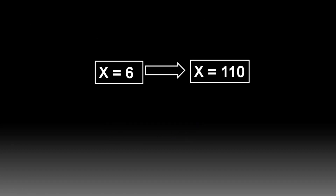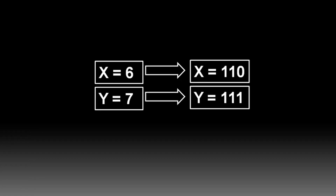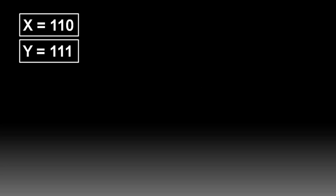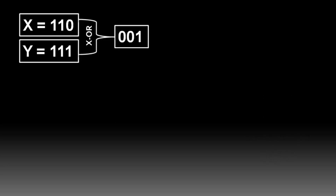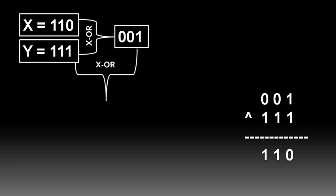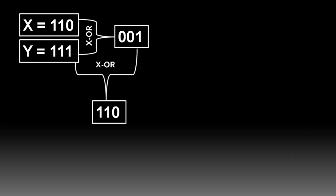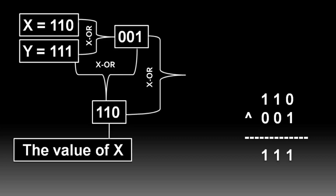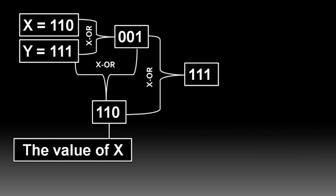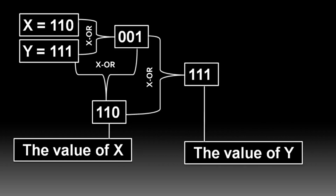We have X equals 6, whose binary value is 110, and Y equals 7, whose binary value is 111. First we XOR these two values — you can see the calculation on screen — the output is 001. The obtained result is again XOR'd with Y, giving 110, which is the original value of X. These two values are then XOR'd again to give 111, which is the value of Y.